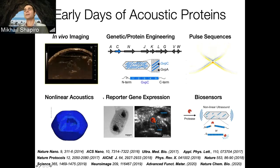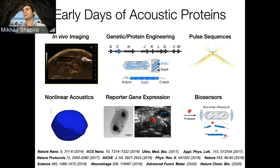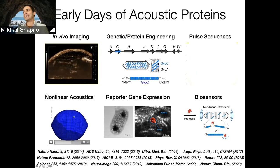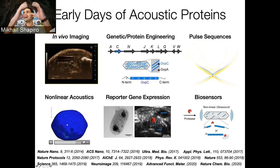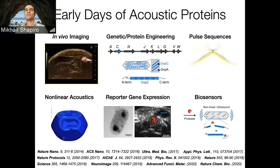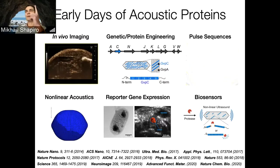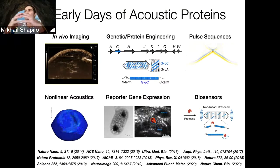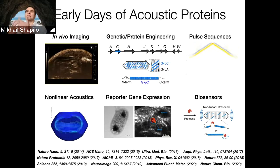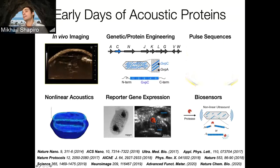Basically, everything you can do with fluorescent proteins under a microscope or in optically accessed biological specimens — we want to be able to do with ultrasound deep inside of tissues. The fun thing about it is that it's a very weird protein: instead of thinking about quantum yields and extinction coefficients, we're thinking about nonlinear mechanics. We had to team up with collaborators in aeronautical and mechanical engineering to study how these structures respond to acoustic pressure, and they have this beautiful buckling phenomenon.